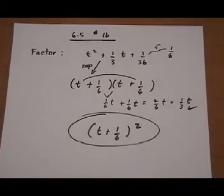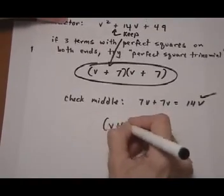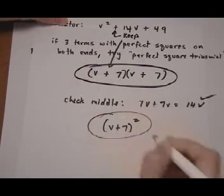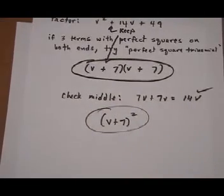And on number 14, final answer would be v plus 7, the whole thing being squared. Thank you for listening. Bye.